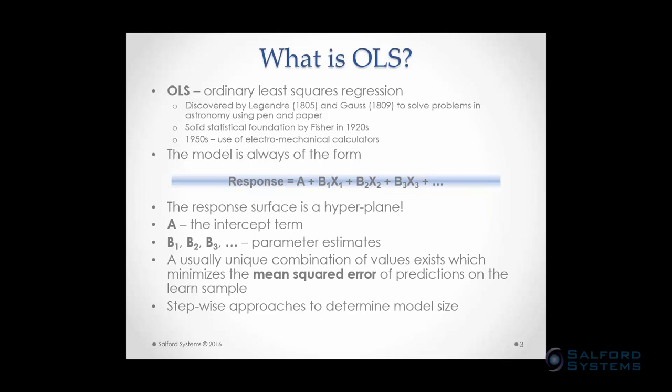The model for standard linear regression is always of the same form: response equals A plus B1·X1 and so on. A is your intercept term, the B terms are your parameter estimates, and X1, X2, X3 are your predictors. This response surface is always a global hyperplane. You're looking for a unique combination of A and B values to minimize the mean squared errors of predictions on the learned sample — using all of your data. Stepwise approaches are typically used to determine model size.